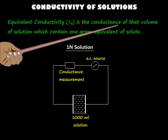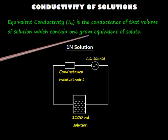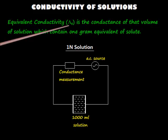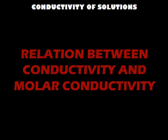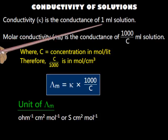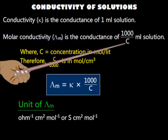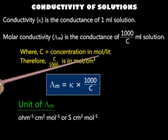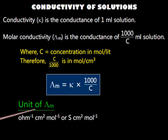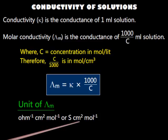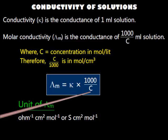Equivalent conductivity is the conductance of that volume of solution which contains 1 gram equivalent of solute, and is denoted by lambda e. Conductivity is the conductance of 1 ml of solute, whereas molar conductivity is the conductance of 1000 divided by c ml of solute, where c is the concentration in moles per liter. Therefore, we get the formula for molar conductivity, and its unit is ohm-inverse cm² mol-inverse or siemen cm² mol-inverse. Molar conductivity will rise with dilution because the increase in conductivity is more than compensated by the concentration term in the denominator.